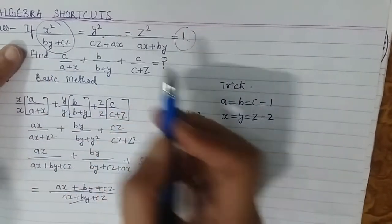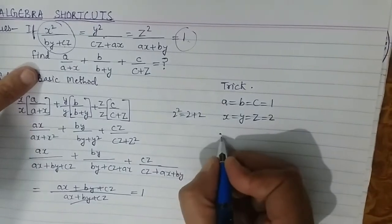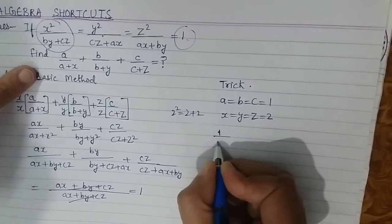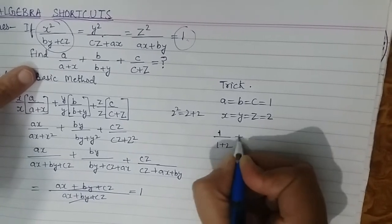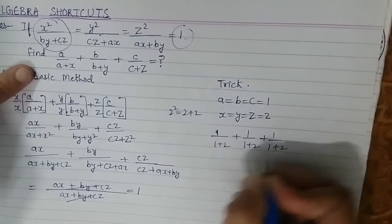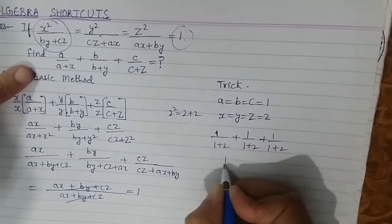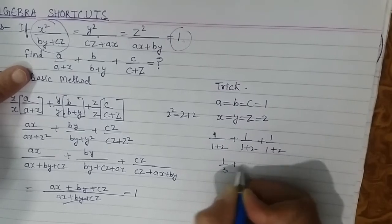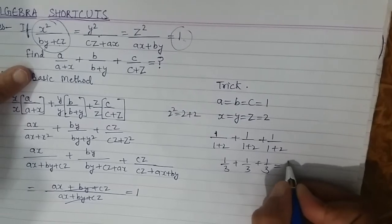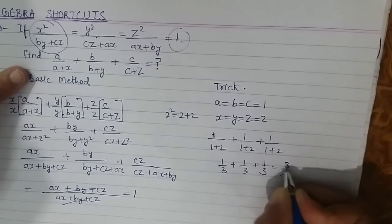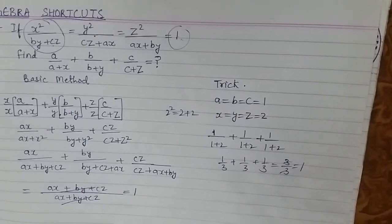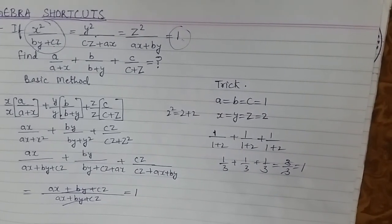This equality is satisfied with these values, so I can use them in the final expression. The value of the final expression is: a=1 divided by (1+2), b=1 divided by (1+2), c=1 divided by (1+2). So this is 1/3 + 1/3 + 1/3, which is three times 1/3, and that is 3/3 = 1. So how quickly we can solve using the trick method! That's it. If you like my video, please subscribe. Thank you.